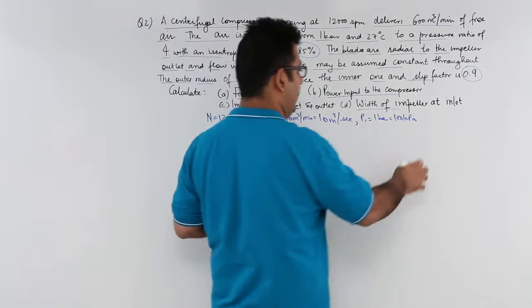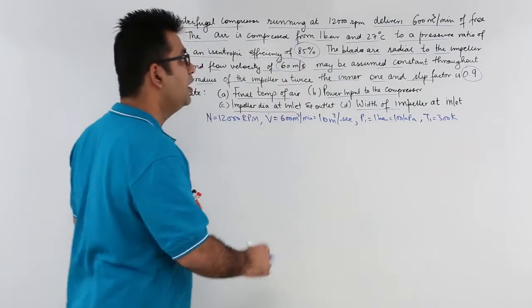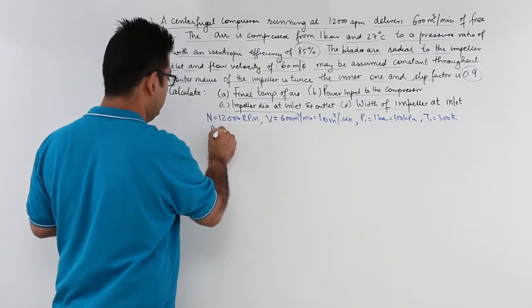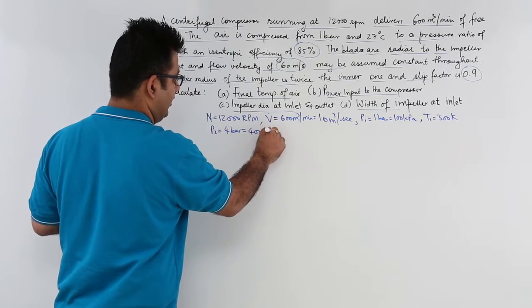Temperature is 300 Kelvin to a pressure ratio of 4. So P2 is 4 bar which is 400 kPa.